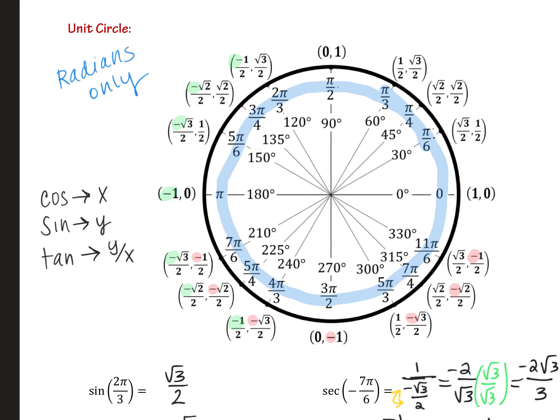So notice in quadrant 3, both x and y's are negative, while they're both positive in quadrant 1. X's are negative in quadrant 2, y's are negative in quadrant 4. Get that in your head. It will come back to haunt you if you're not too familiar with it.